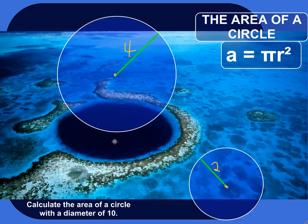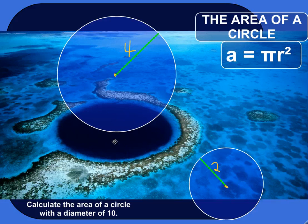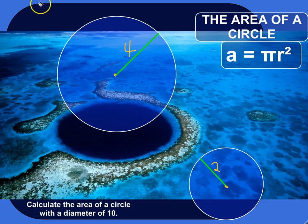Alright, let's calculate the area of a few circles here. The formula for the area of a circle is area equals pi, which is a special number, times the radius of the circle squared.